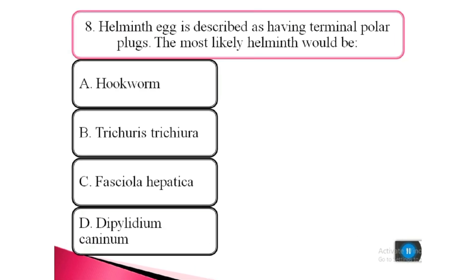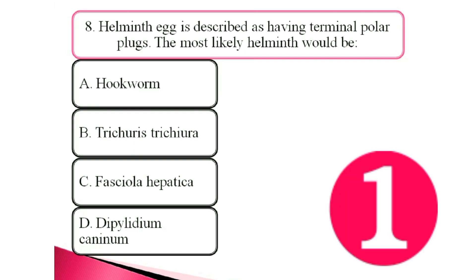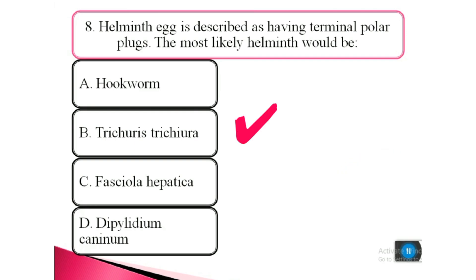Question 8. A helminth egg is described as having terminal polar plugs. The most likely helminth will be: a. hookworm, b. Trichuris trichiura, c. Fasciola hepatica, d. Dipylidium caninum. The answer is b. Trichuris trichiura.